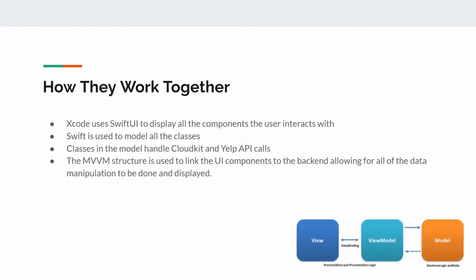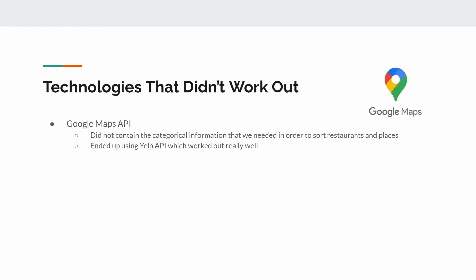In Xcode, we used SwiftUI to display all of the components that the user interacts with. We also used Swift to model all of our classes, which handle the CloudKit and Yelp API calls. We used an MVVM structure to link all of our UI components to our back end so that all of our data can be manipulated and displayed correctly. As for technologies that didn't work out, we initially planned to use the Google Maps API instead of the Yelp API, but we couldn't use it because it doesn't have the right information in its queries — we couldn't get category information or sort restaurants correctly. We ended up using the Yelp API, which works really well and has all the information we wanted.